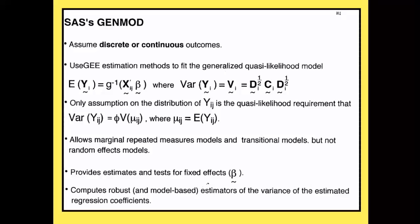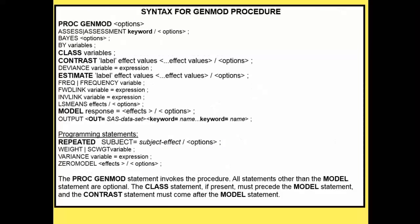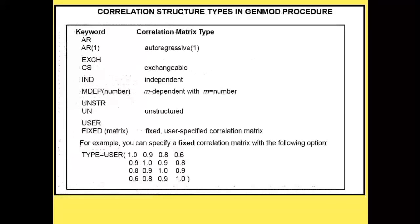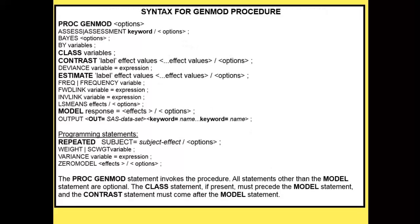Where GenMod was really put forward was to deal with non-linear models like logistic models. There's no real reason to spend time on what GenMod gives for a linear model since it's essentially the same as proc mixed. The focus is running GenMod for a non-linear model — specifically a binary logistic model for correlated data — which we'll illustrate with the bypass dataset where aspirin is the exposure variable.